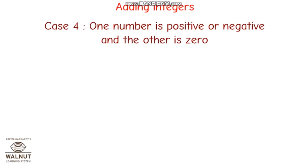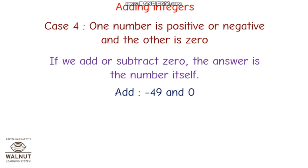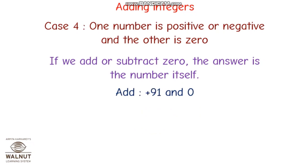Case four: one number is positive or negative and the other is zero. When you are adding with zero, the answer is the number itself. For example, minus 49 and zero — the answer is minus 49 only. The sign of the number itself becomes the sign of the answer.